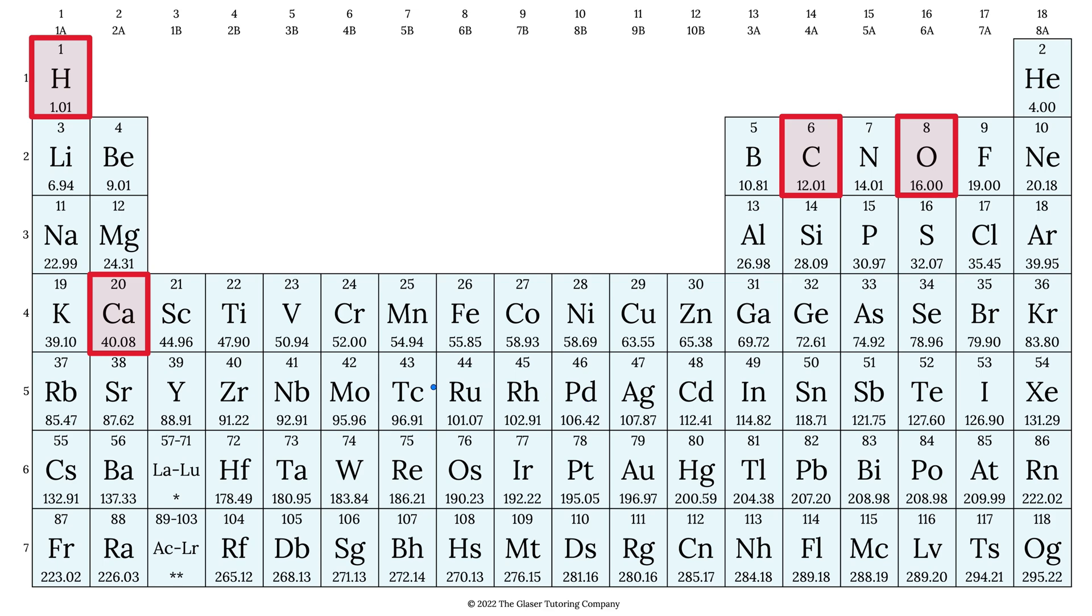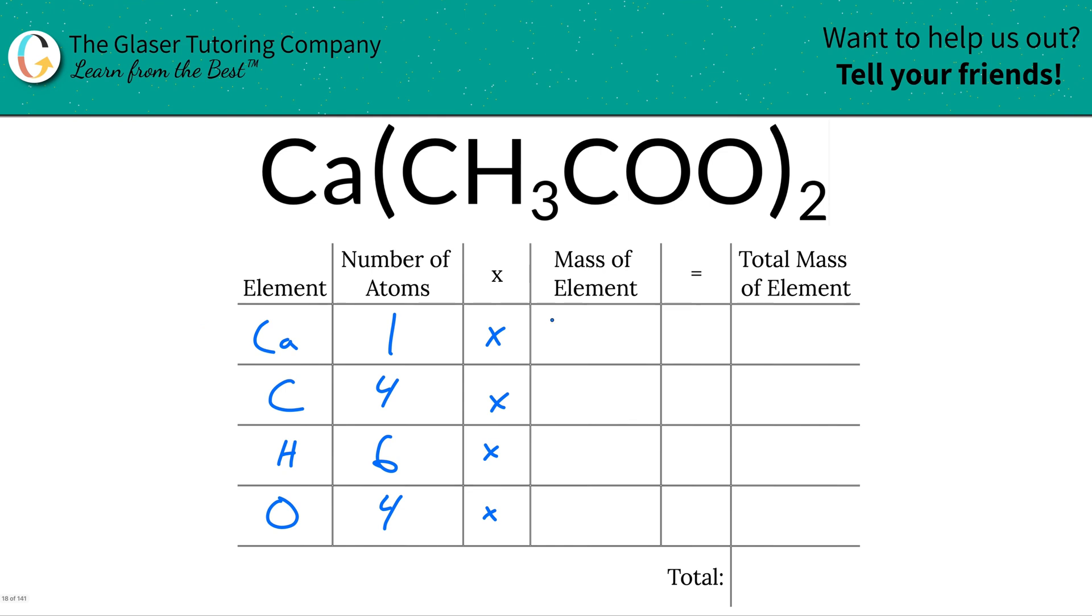So let's write those on down. Calcium here is going to be 40.08. The mass of carbon there was 12.01. The hydrogen was 1.01 and then oxygen is 16.